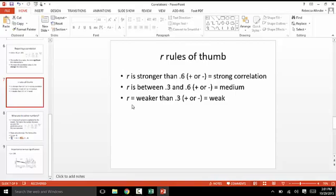The rules of thumb when it comes to strong versus weak with R is that if the rho is stronger than 0.6, and that's positive or negative, so positive 0.7 or negative 0.7 for instance, that is a strong correlation. When rho is between 0.3 and 0.6, positive or negative again, that's a medium correlation. And if it's weaker than that, it is just a weak correlation.